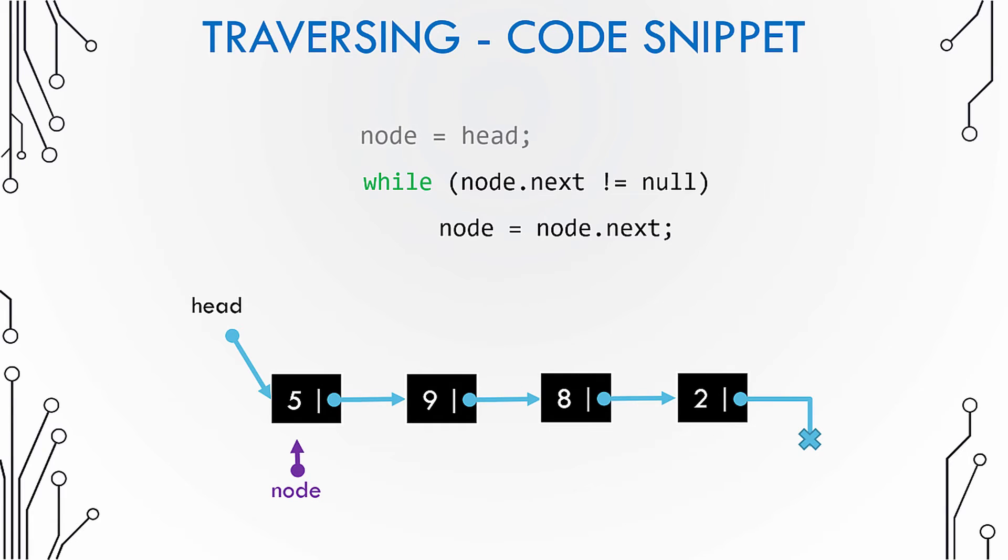So the first step is to make a copy of the head pointer. This is needed because if we change the value in the head pointer, we mess up the pointer to the first node and then essentially lose access to the linked list. So we have made a copy of the head pointer. We call it the node pointer.